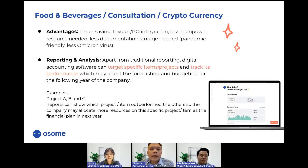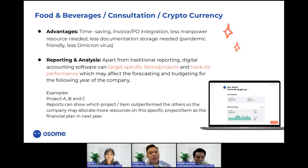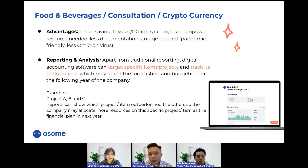Let's look at some industries. I'm going to highlight advantages across a few and touch on reporting and analysis. We have food and beverages, consultation, and cryptocurrency industries. These three seem unrelated, but in terms of bookkeeping and accounting they're actually not that different. If they have online accounting software supporting them, it will be a lot easier and less time-consuming.